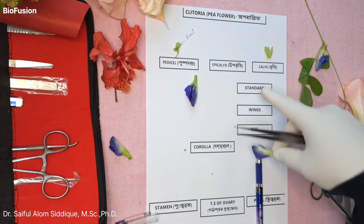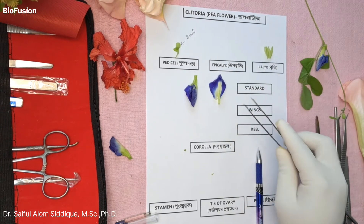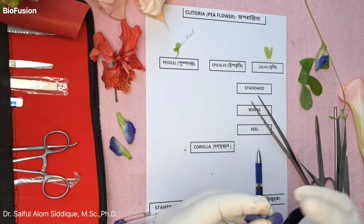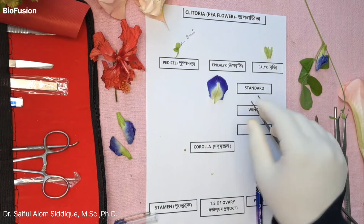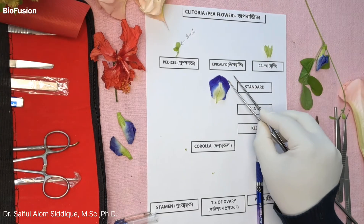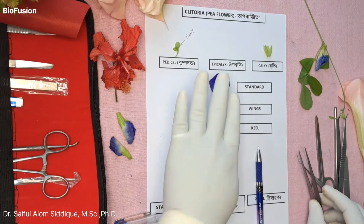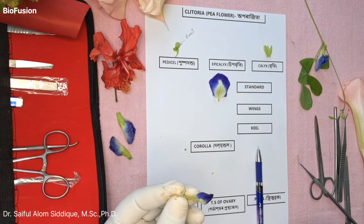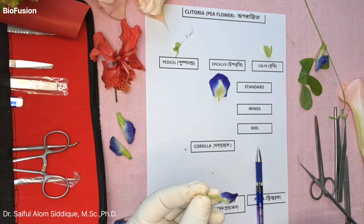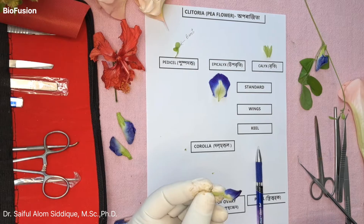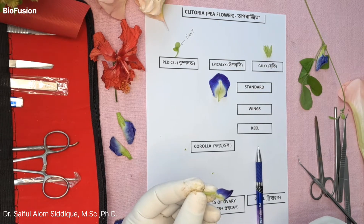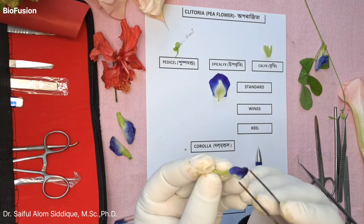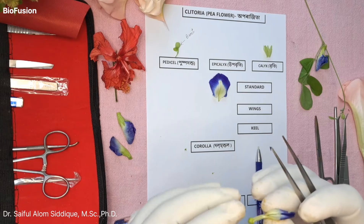Let's open the standard. This is the first thing about the t-shirt. Here are the wings. This is a very interesting flower. So this flower is very small. If you look at this flower, it's a very small flower. You can see the flower in the house — make sure the wings are linked.